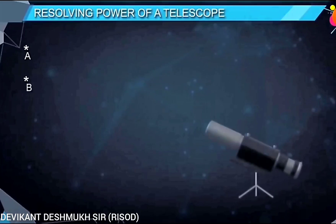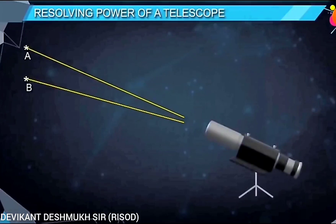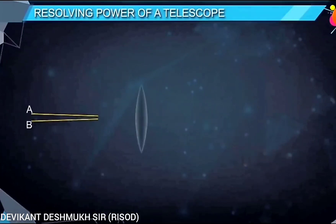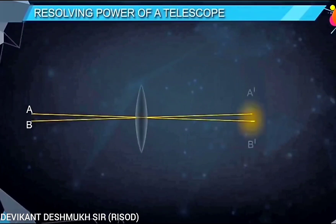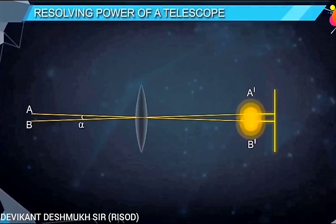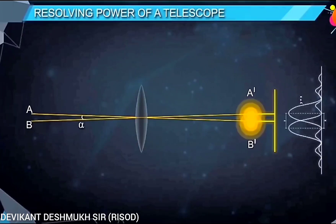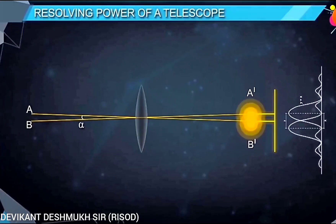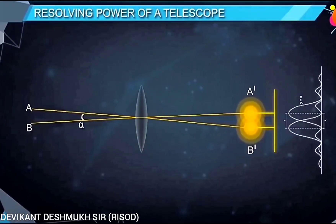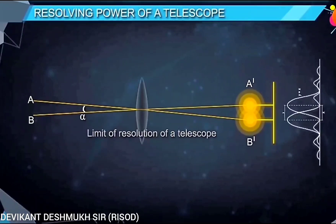When two distant objects A and B are observed through a telescope, the rays from these objects undergo diffraction and produce images A dash and B dash in the form of a diffraction pattern. Let alpha be the least angle between two objects A and B for which the images A dash and B dash are found to be just resolved. Then this alpha is called the limit of resolution.